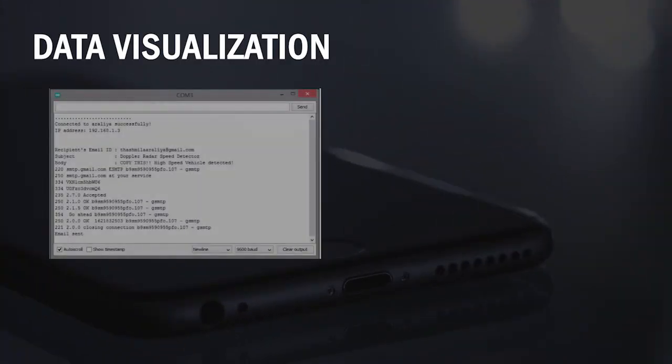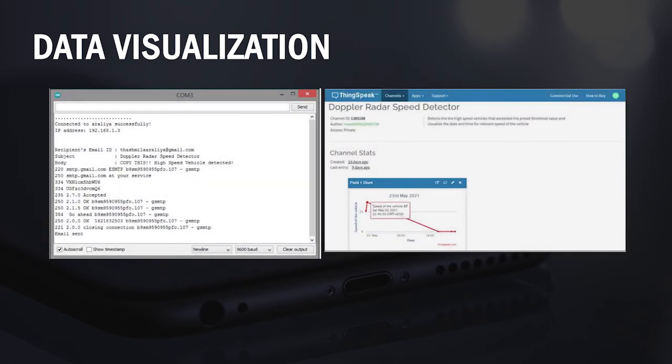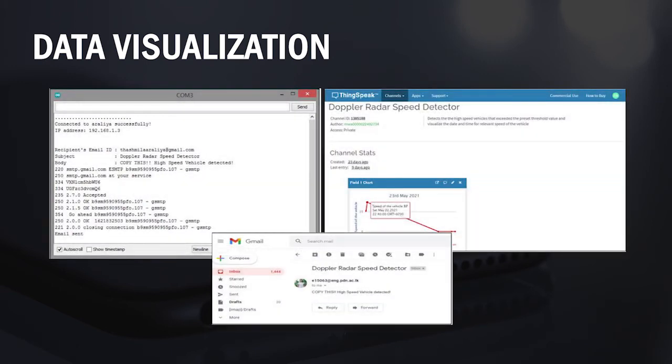The transmitted data is then visualized on a freely available IoT platform called ThingSpeak and informs the relevant authorities through alert emails if there is a speed violation.